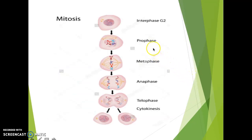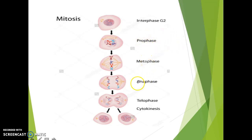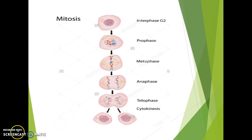That concludes our lesson on mitosis. For mitosis, you have four phases — PMAT: prophase, metaphase, anaphase, and telophase. The last step of the M phase is cytokinesis, but that is not part of mitosis itself. I hope you found this video instructional. I will see you on the next video — stay very good!